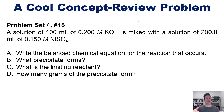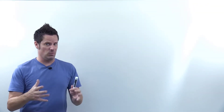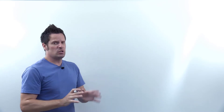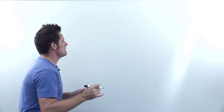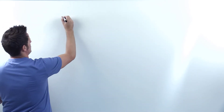I invite you to pause the video here, attempt this on your own first, or as much as you can, then hit play, upon which I will show you how to do it on the board. This problem really combines a lot of different things in one. So it starts out by saying that we're reacting KOH with nickel sulfate. What I'd like to do is begin by trying to write down a chemical reaction equation for that.